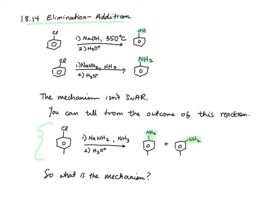If we were in the S_NAr mechanism, we would only get this product. But since we get both, we know the mechanism is different. So what is it?